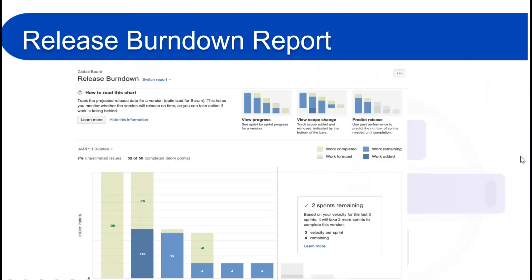Now we will see how the release burndown report looks. You can see there are instructions on how to read the chart, and the graph is below. We have green, light blue, and dark blue colors. Each bar represents a sprint, and each different color contains information about that sprint. The release burndown report is optimized for scrum teams that work in sprints.